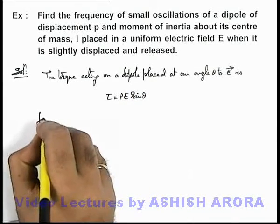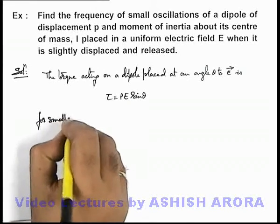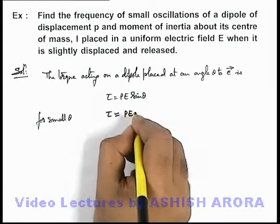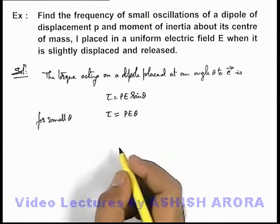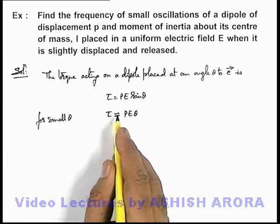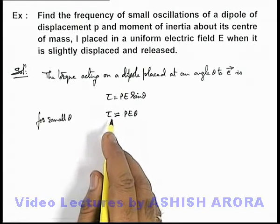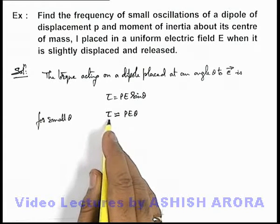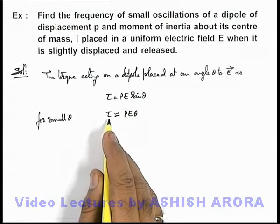Here we can write for small theta, the value of torque will be approximately PE θ. This torque will be applying on the dipole in the direction of stable equilibrium, so we can treat this torque as restoring torque.